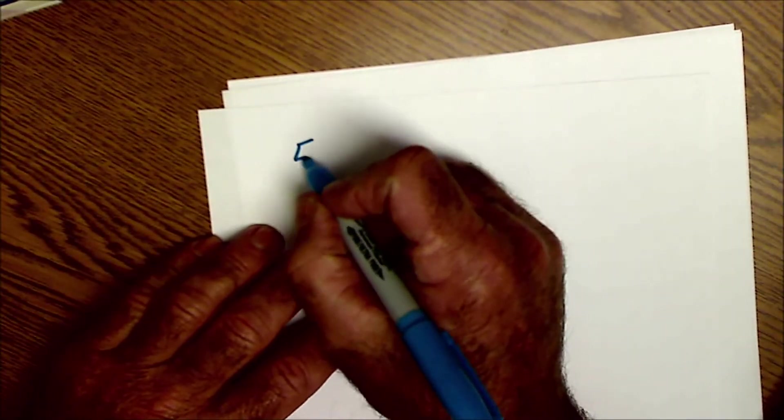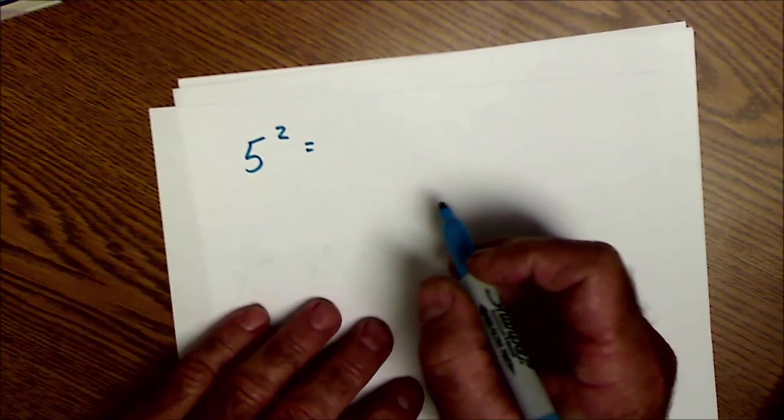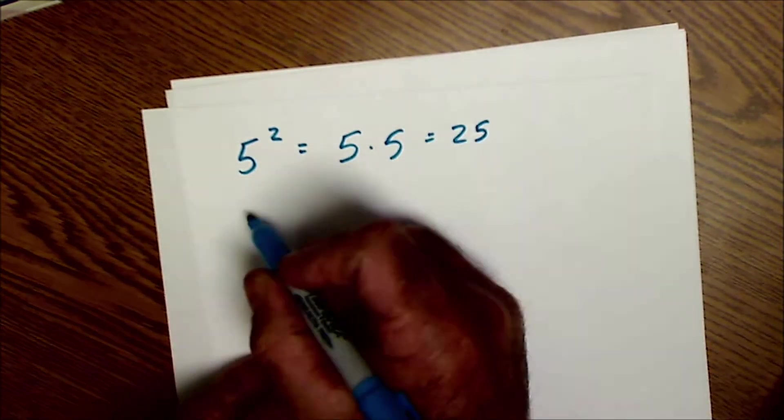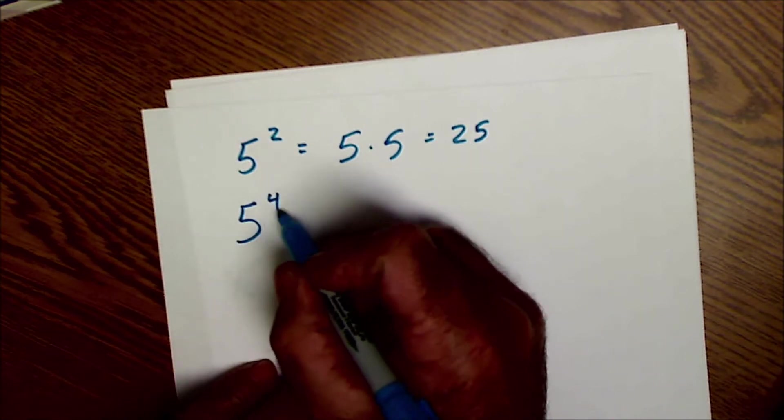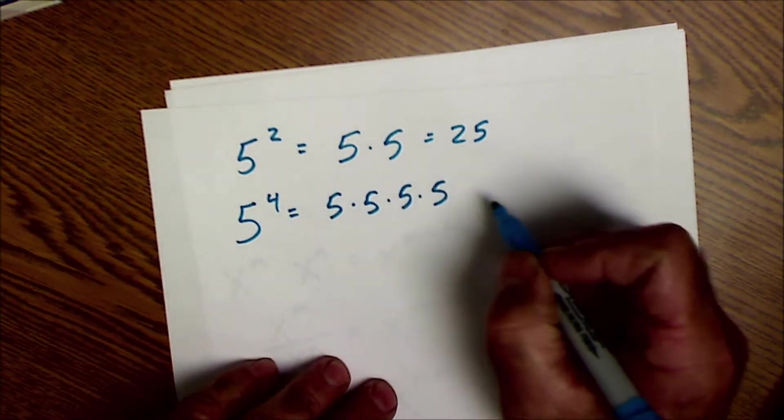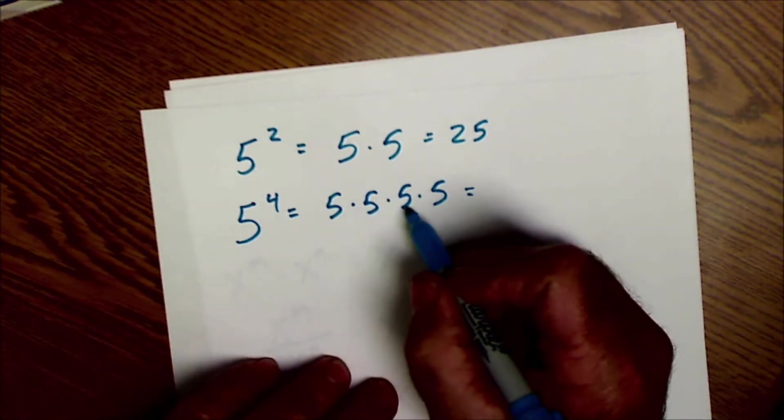So if you have something like 5 squared, what that means is 5 times 5 or 25. Or if you have 5 to the power of 4, that's 5 times 5 times 5 times 5, or 625.